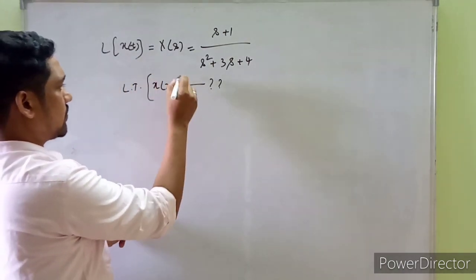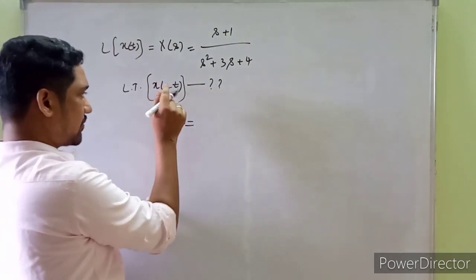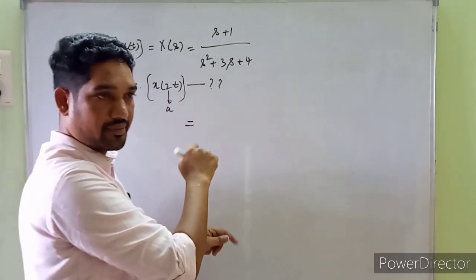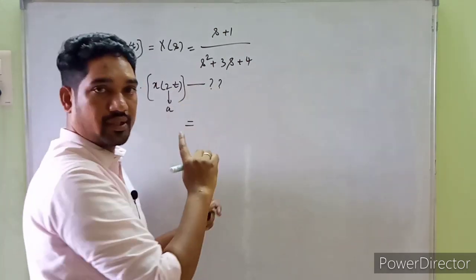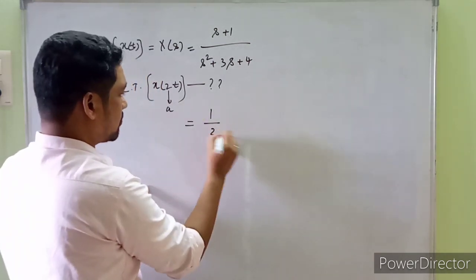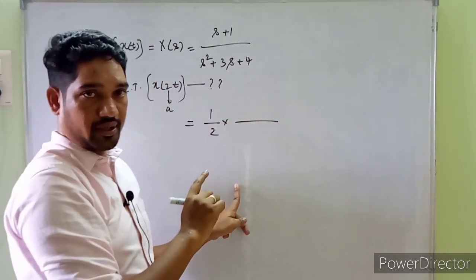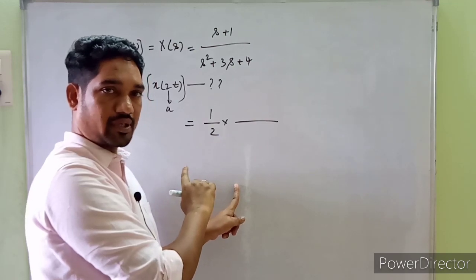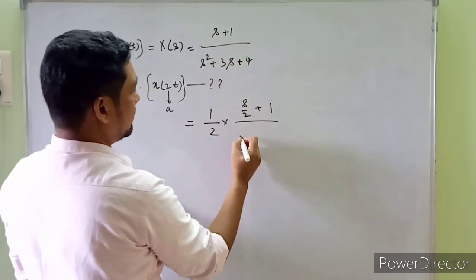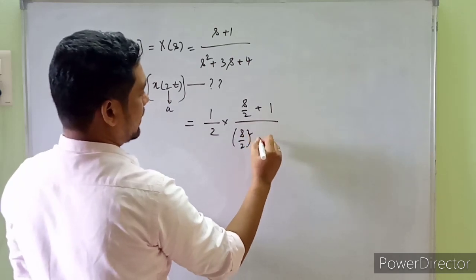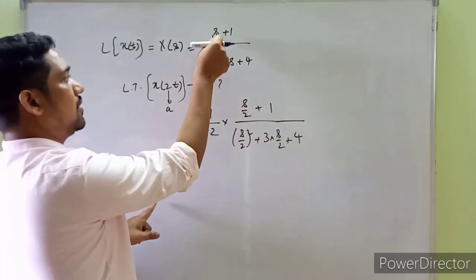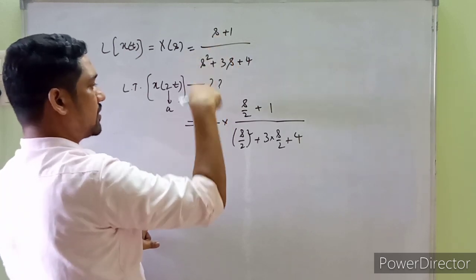Applying the time scaling property: the Laplace transform of x(a*t) = (1/a)*X(s/a). Here a = 2, so we have (1/2) * X(s/2). We substitute s/2 in place of every s in X(s): so the result is (1/2) times (s/2 + 1) / ((s/2)² + 3*(s/2) + 4). Wherever we find s, it is substituted with s/2.